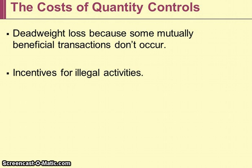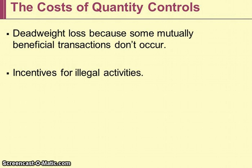In conclusion, price and quantity controls will cause inefficiencies in markets. From an economist's point of view, we're not arguing for or against these controls because there are many good reasons for setting some of them. But the argument is: please know what the predictable secondary effects are, and please be conscious of the inefficiencies that will result in markets as a result of these price and quantity controls.